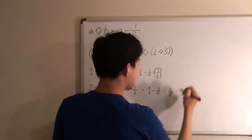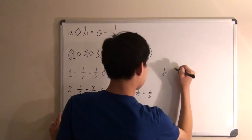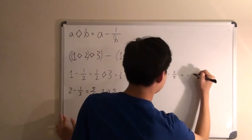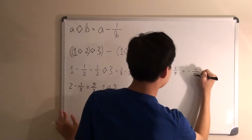Now we do 1 sixth minus 2 over 5, and that would give us negative 7 over 30.